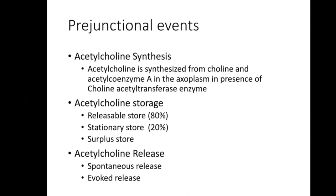Acetylcholine is synthesized from choline and acetyl coenzyme A in the axoplasm in the presence of the enzyme choline acetyltransferase. It is stored in vesicles at the nerve ending in three facilities: the releasable store (~80%), near the membrane; the stationary store (~20%), a little behind; and a surplus store revealed by stimulation with physostigmine, from which a large amount of acetylcholine appears.